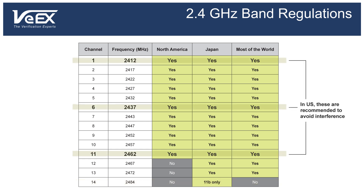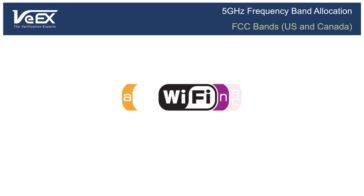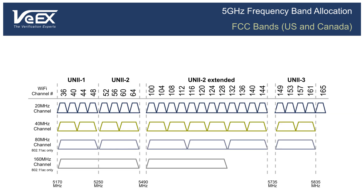Channels 1, 6, and 11 are the only non-overlapping channels. The 5 GHz UNII, or Unlicensed National Information Infrastructure Band, is less crowded than the 2.4 GHz frequency band, and is used by the 802.11a, n, and ac standards. While the channels are 20 MHz wide, there is no overlap between adjacent channels.